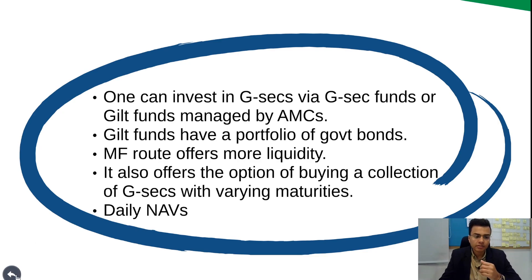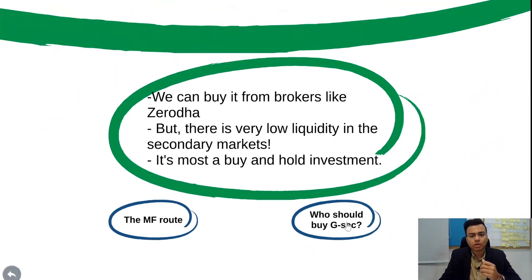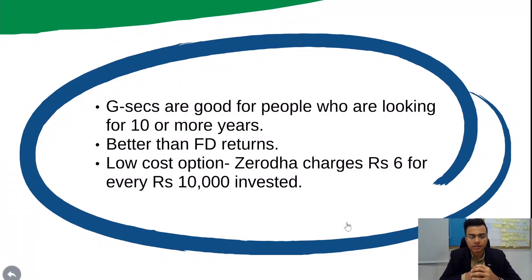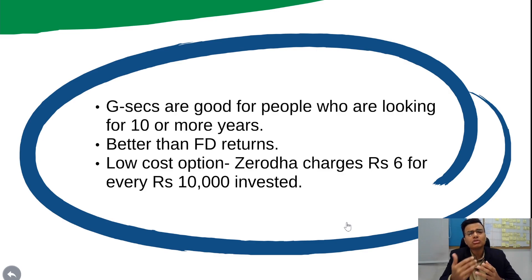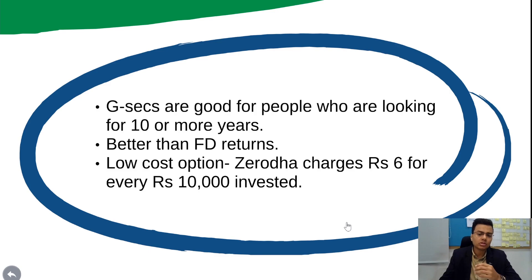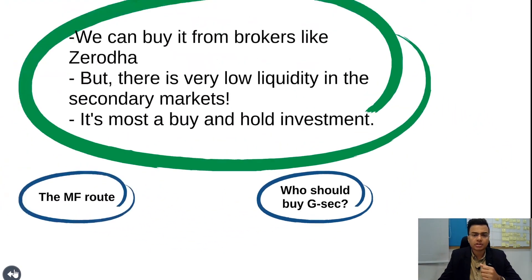Who should go for government securities? People looking for an investment horizon of 10 or more years should consider them. They offer better returns than FDs and are very safe — the safest form of bonds available. It's also a low-cost option; even with direct buying, Zerodha charges just 6 rupees for every 10,000 rupees invested. That was all about government securities.